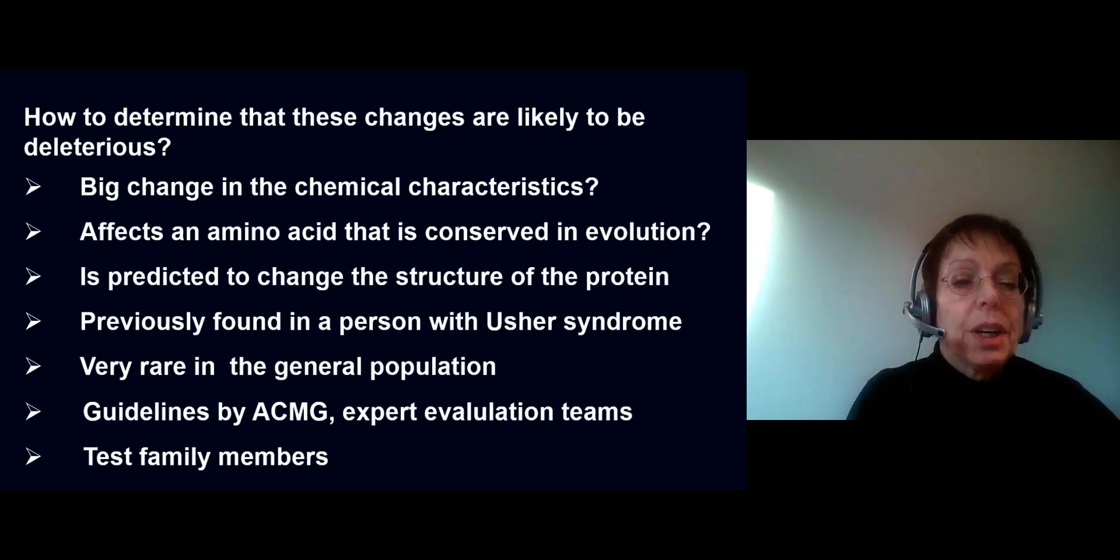That would already fit with the two changes causing Usher syndrome, as both copies of the male patient are affected by a change. Then we look at the sibs. The oldest sister has M1 and a normal copy. The second sister has two normal copies, and the brother has M2 and a normal copy. The segregation fits with being disease-causing.